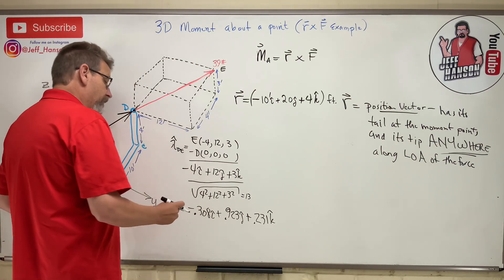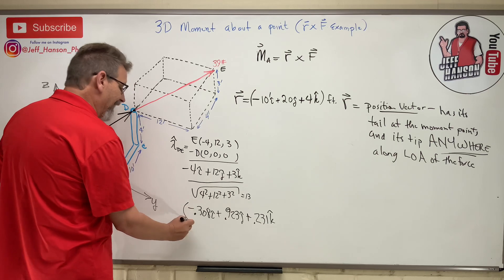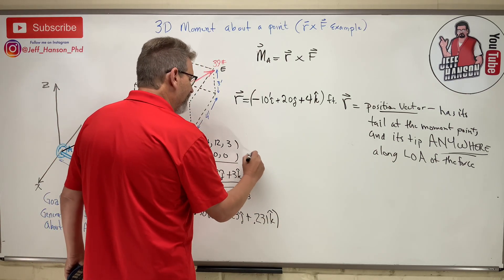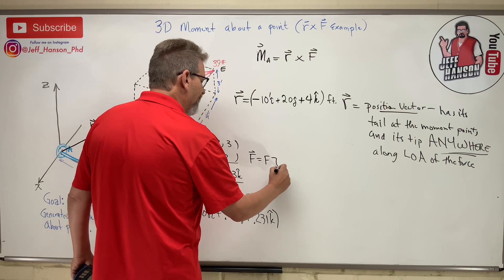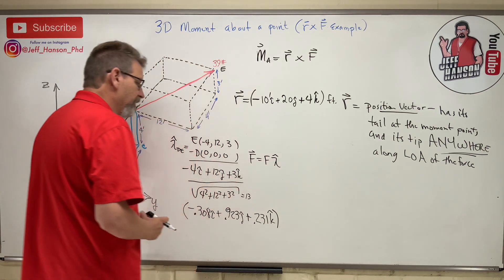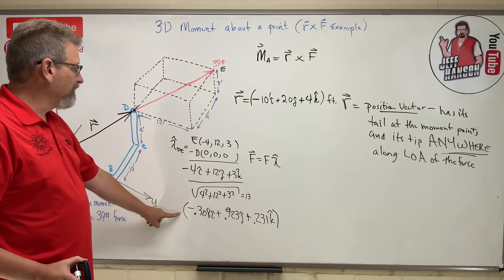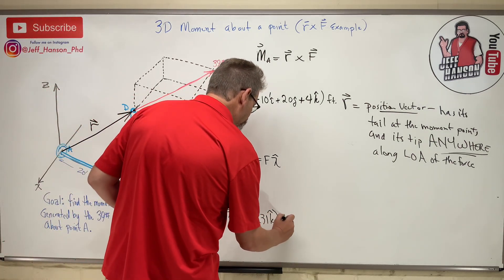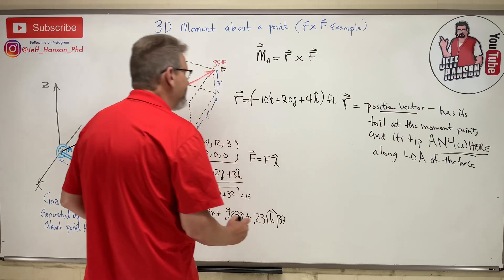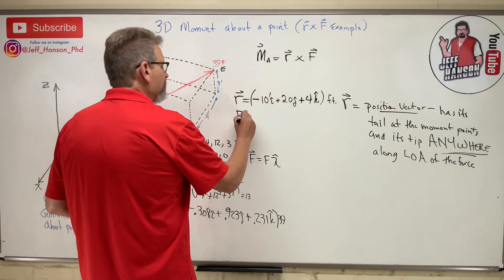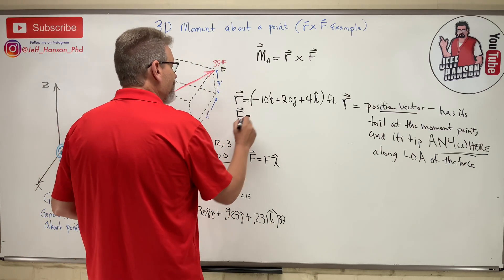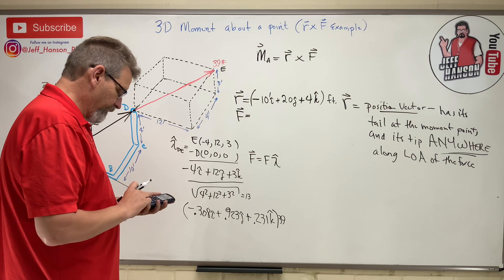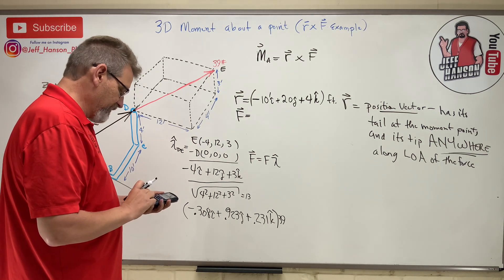There is our lambda vector. Now we need to take our lambda vector and multiply it by what? Remember, the force vector is equal to the magnitude times the direction. There's the direction and there's the magnitude. Let's multiply that whole thing by 39, and that will give us our vector F in ijk form.